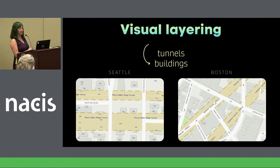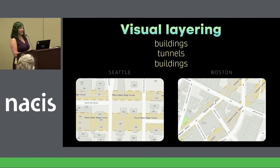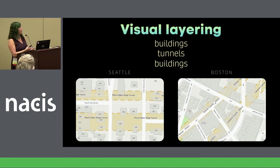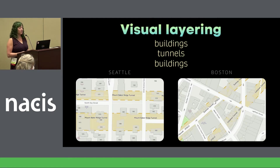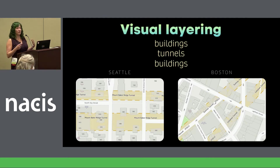More layers. Here's my solution: under the tunnel is the building shadow and building fill. On top of the tunnel is the building outline and a new semi-transparent building fill layer. So now all the features are visible and clear and you can see what's happening at a glance.